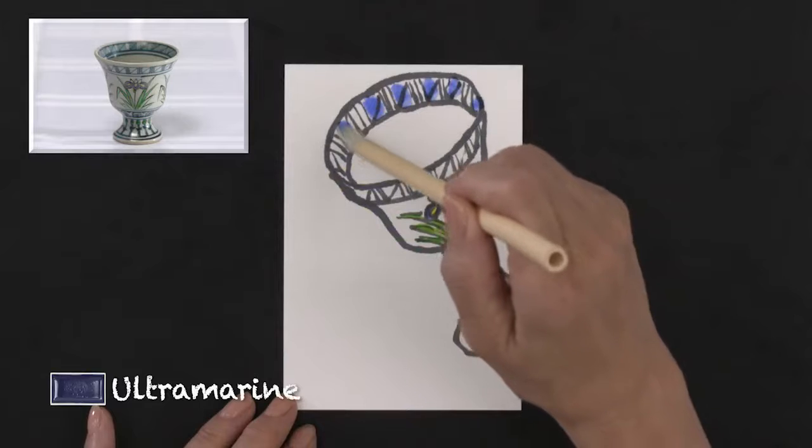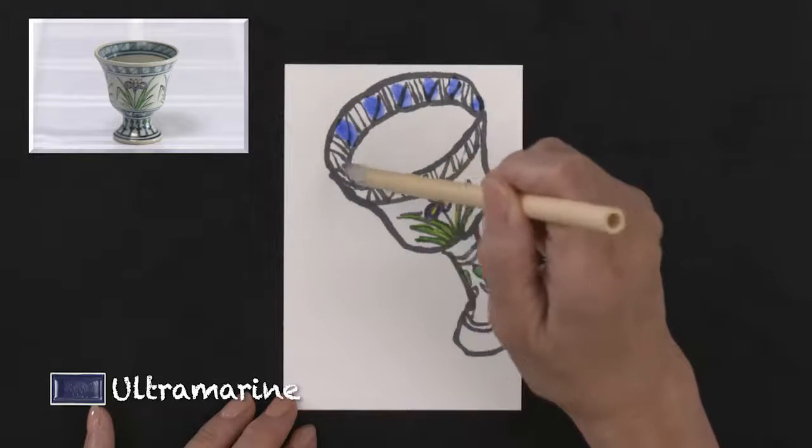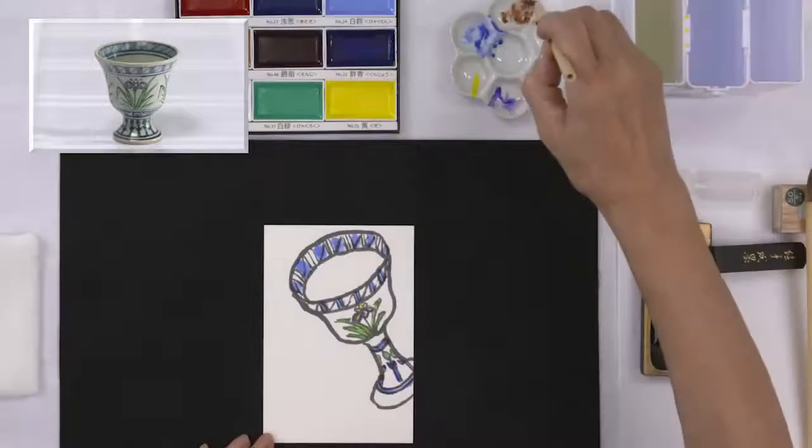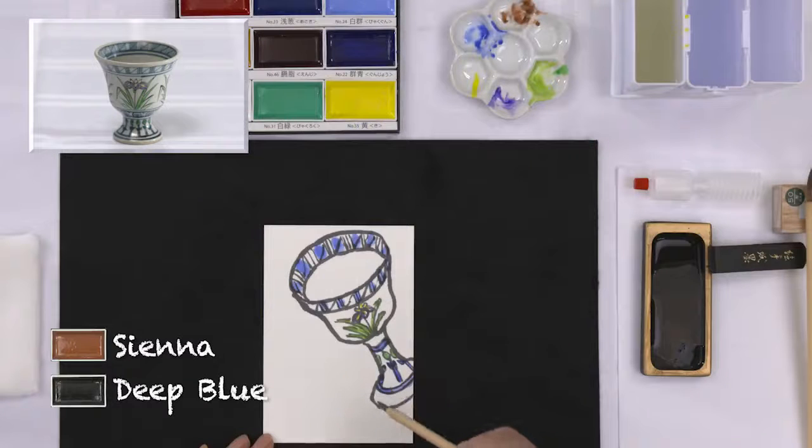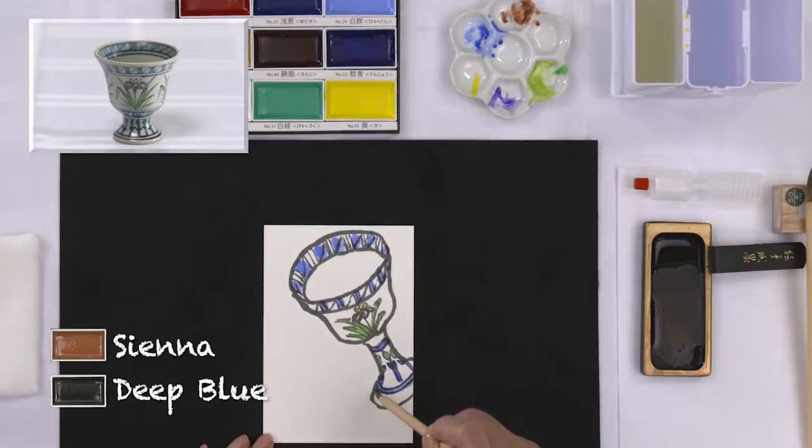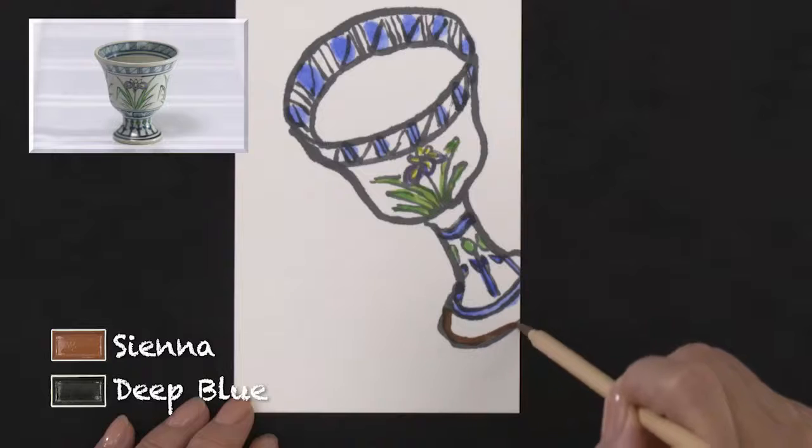Paint the cup's pattern ultramarine with the coloring brush. Using the thin brush, mix sienna with deep blue and paint the rim in detail.